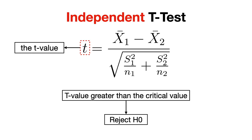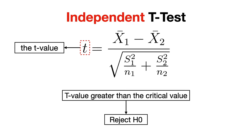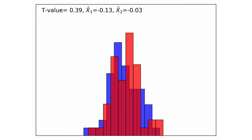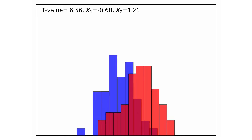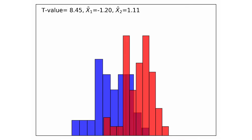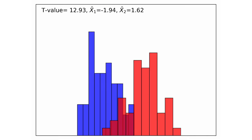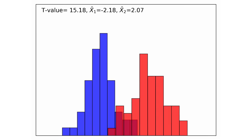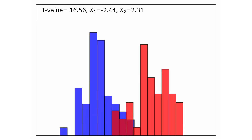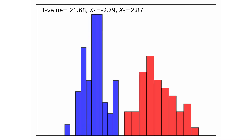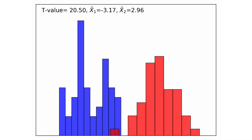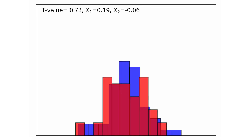Now I'd like to dig a little bit deeper into this formula so we can get a better feeling and understanding about how it affects the end result of our statistics. First of all, we have in the numerator the difference between the means of the two distributions. And if we were to increase it, then we'd get a higher t-value, so a higher chance of rejecting the null hypothesis. This change is pretty intuitive — the further away the two means are, the higher the chance of a significant difference between the two.